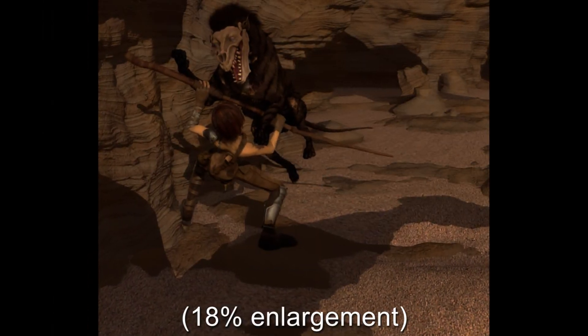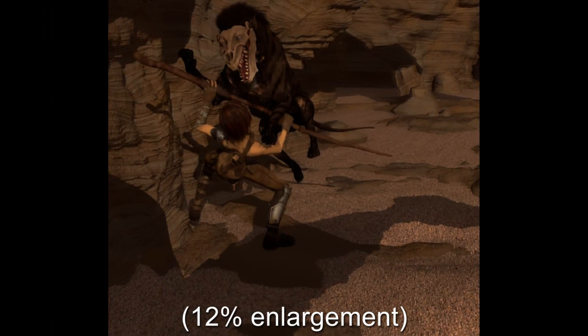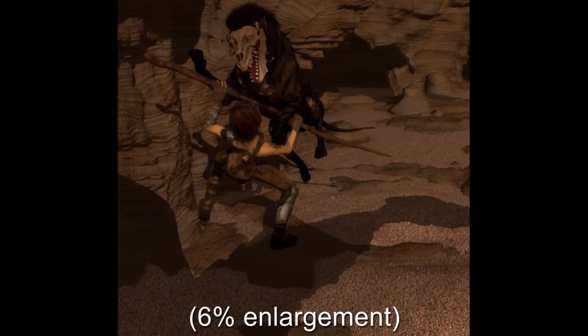The conversion of focal stacks to light fields and back leads to imperfect reconstructions at occlusion boundaries and to a slight cropping at the borders.